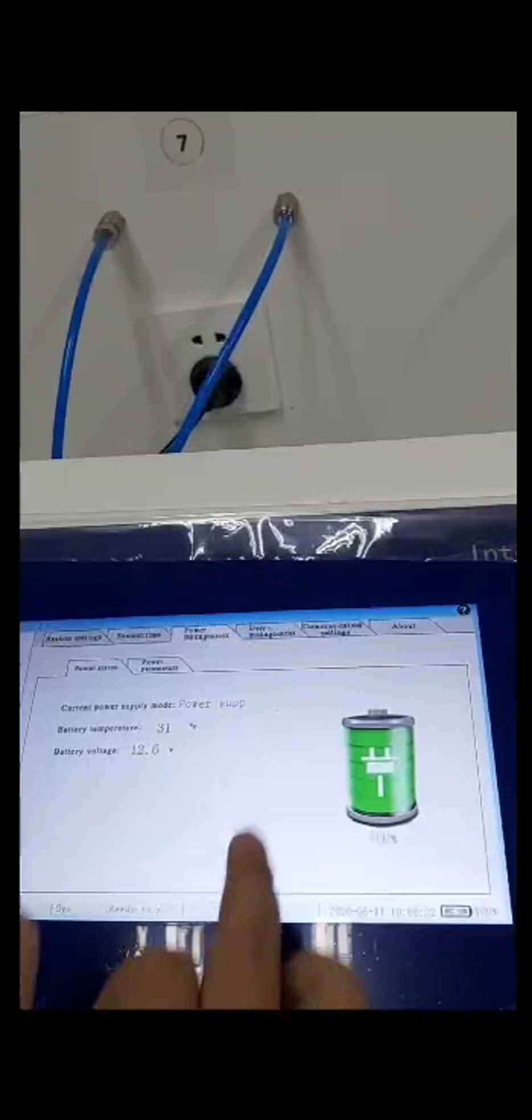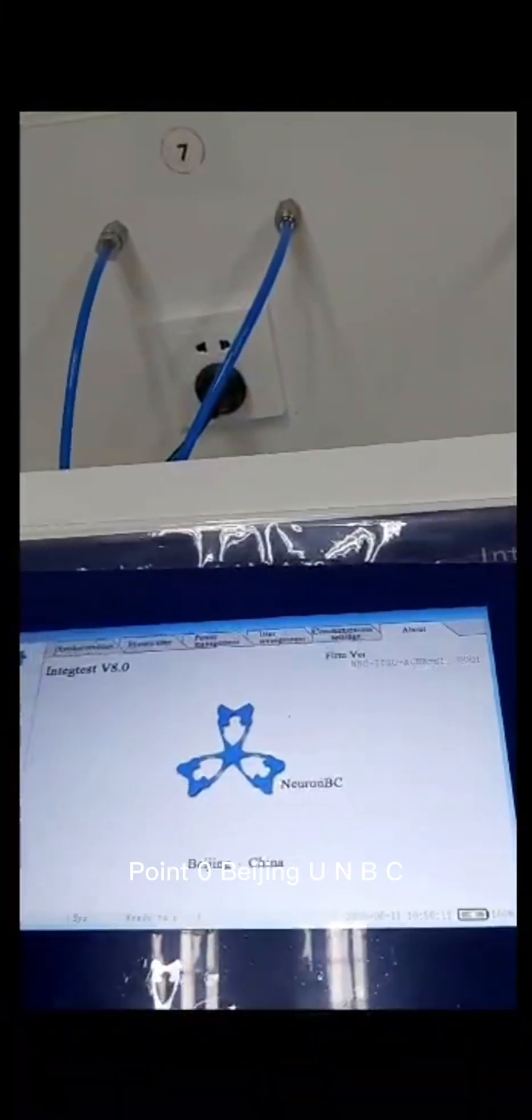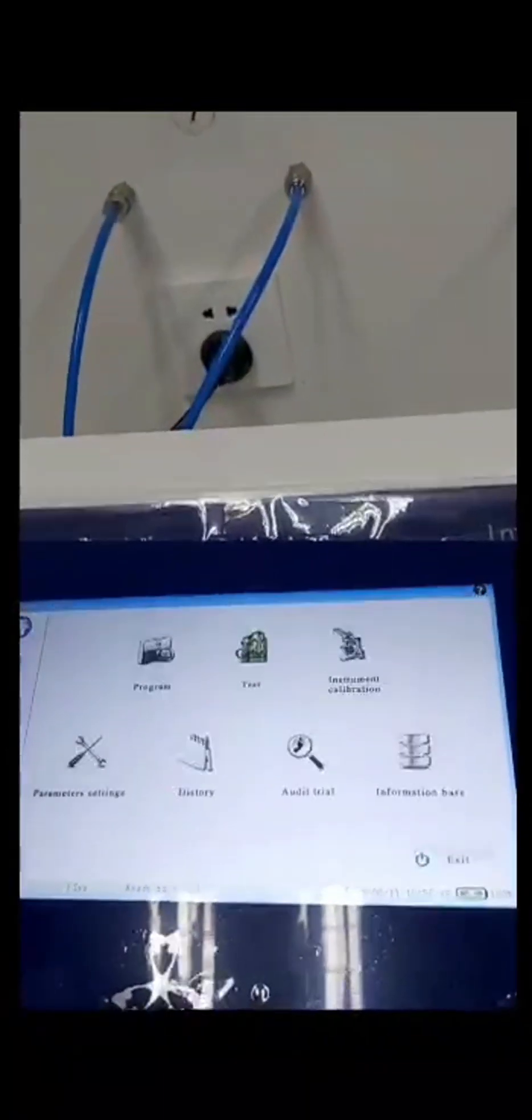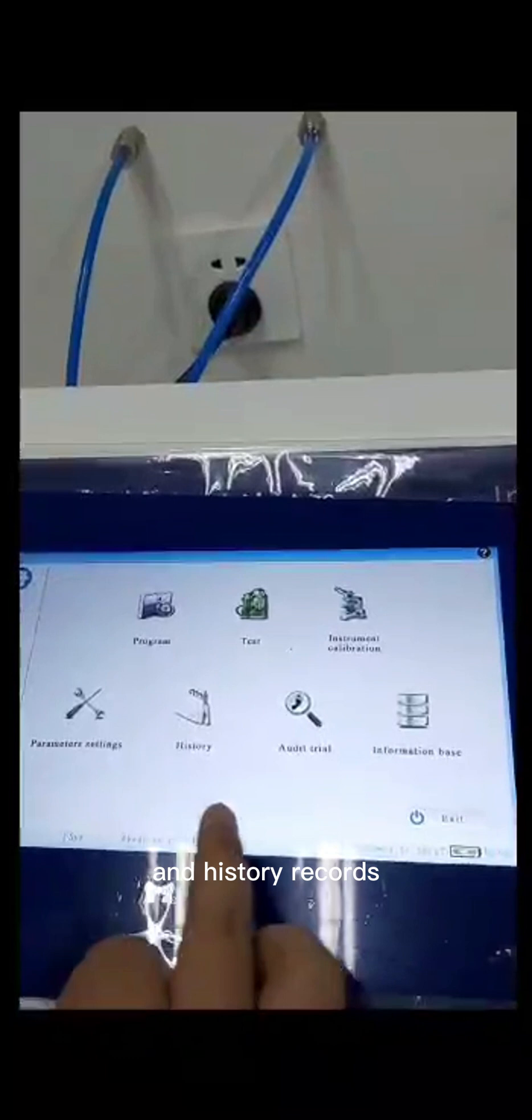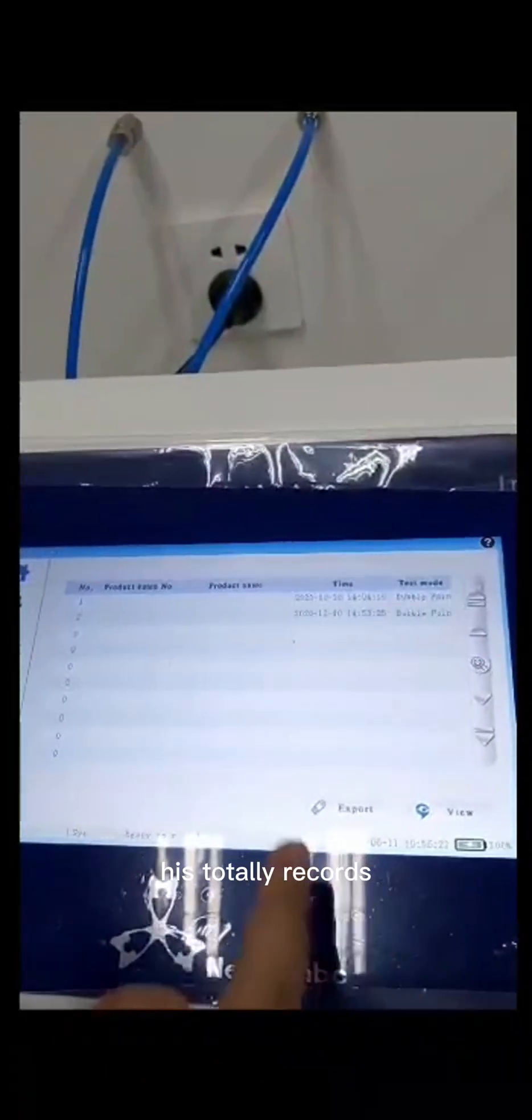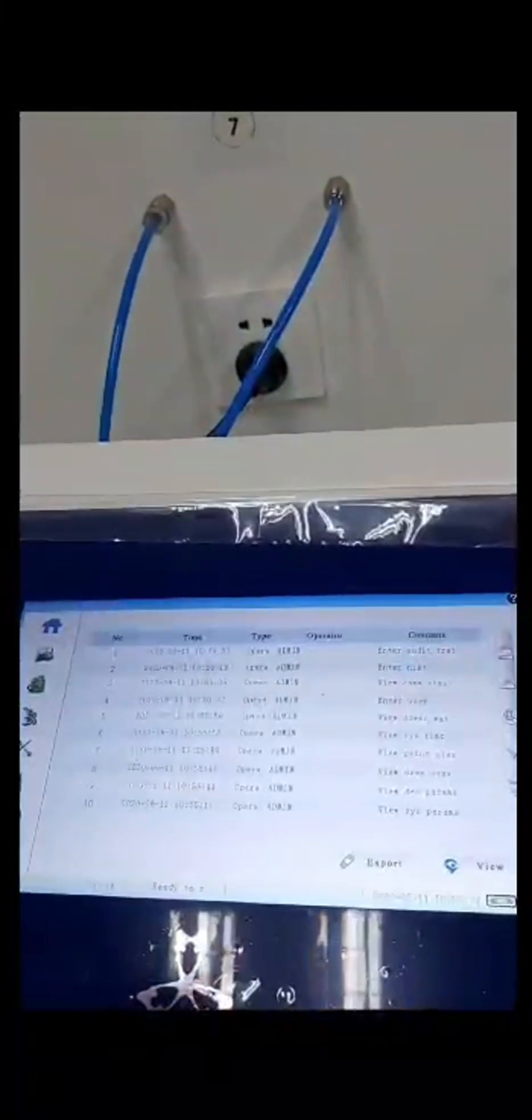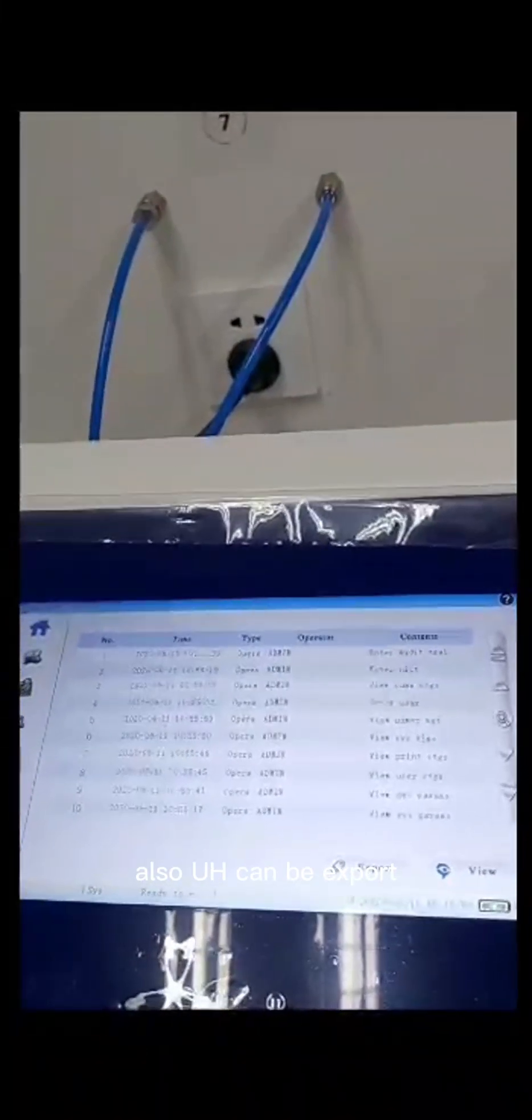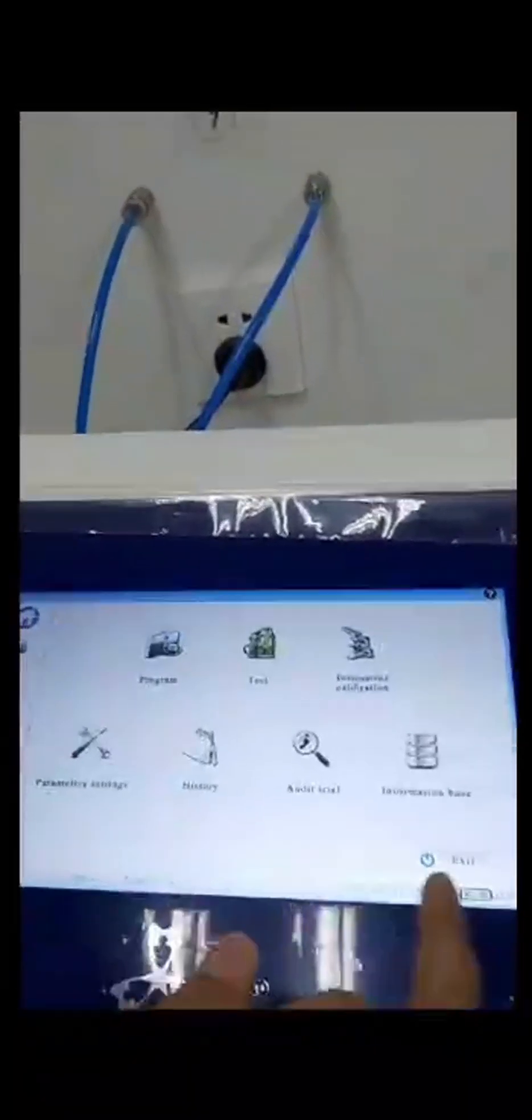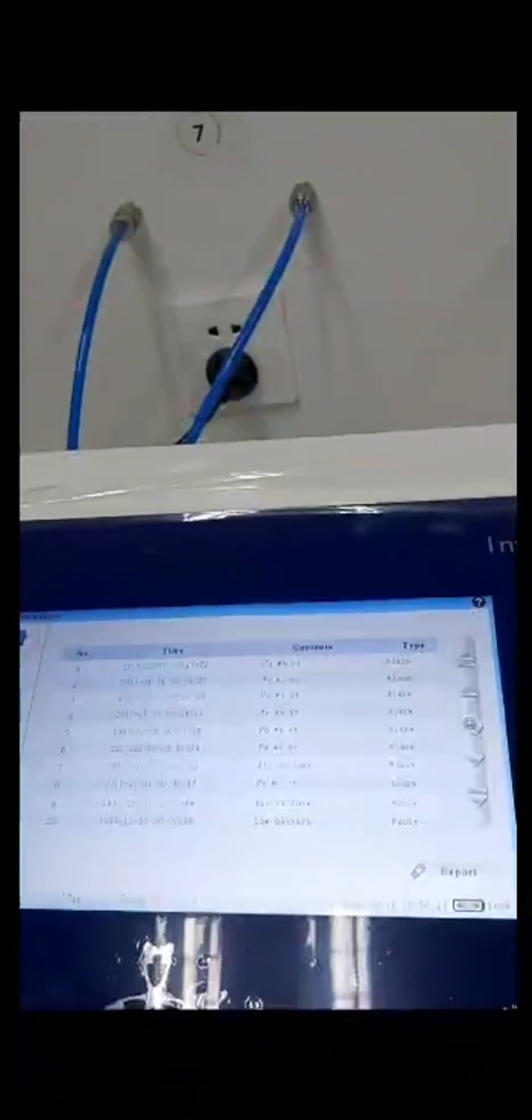For management. User management, communicate, communication settings. About. This is the V8.0, Beijing Neuron BC. History records. History records can be export. Also have the audit trail function. Audit trail function also can be export. Also the information basis. Information basis also can be export.